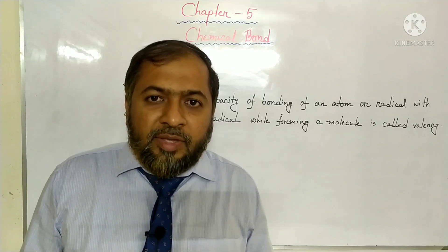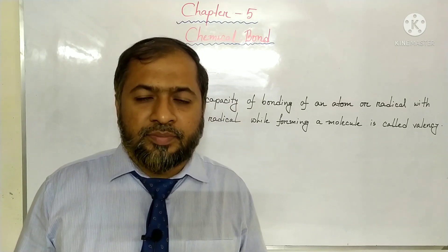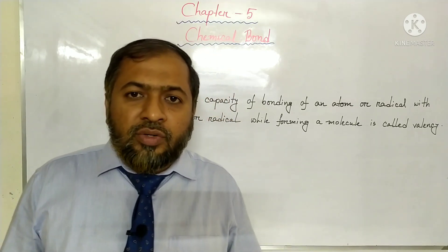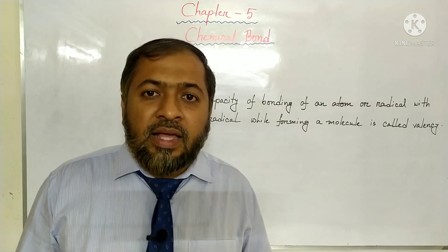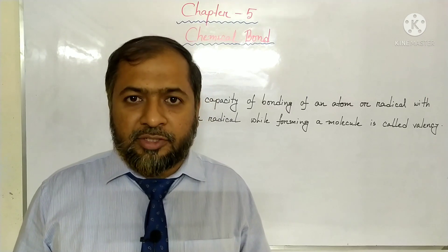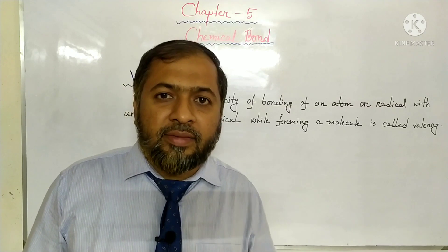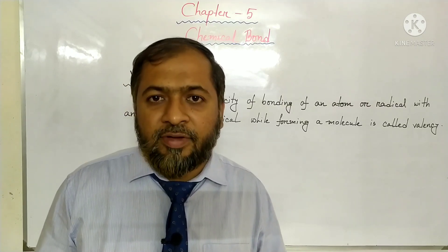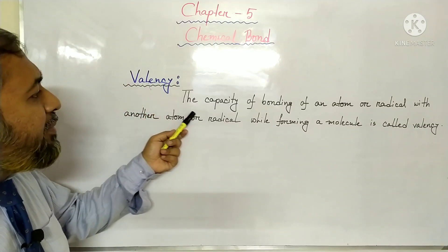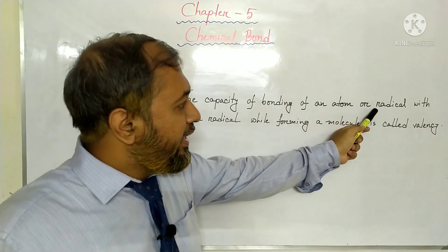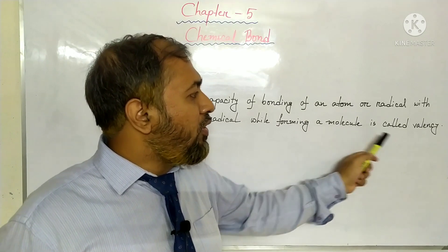While forming a chemical bond, atoms usually donate, share, or receive electrons. This donation, sharing, and receiving of electrons depends on the number of electrons present in the outermost principal energy shell. So this is the capacity of an atom to form a bond with another atom, and this capacity is known as valence. The capacity of bonding of an atom or radical with another atom or radical while forming a molecule is called valence.